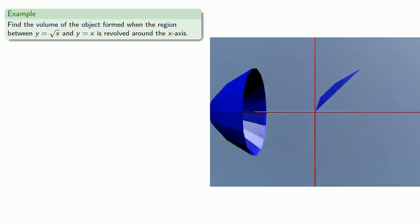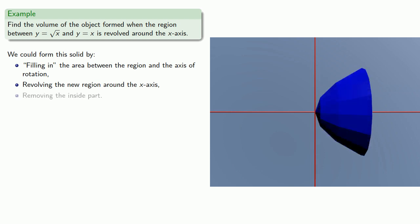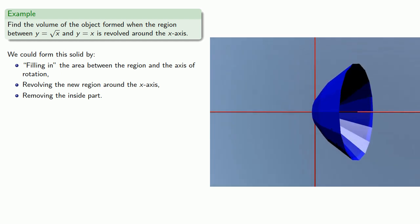And one way we can do this is we can fill in the area between the region and the axis of rotation, revolve the new region around the x-axis, then remove the inside part, which leaves the volume that we want.